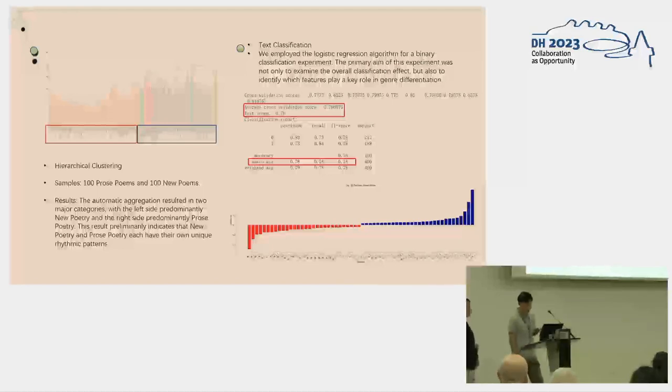The model coefficients on the left are negative, corresponding to prose poems, and on the right are positive, corresponding to neo-poems. Observing the feature patterns, we can notice an interesting phenomenon. Features on the left are mostly pauses within sentences, while those on the right are mostly pauses between sentences. This indicates that if a sample has higher values for pauses between sentences, the model tends to classify it as a neo-poem. Conversely, if a sample has higher values for pauses within sentences, the model tends to classify it as a prose poem.